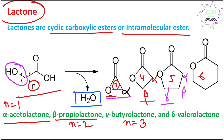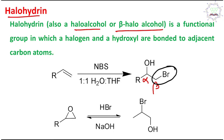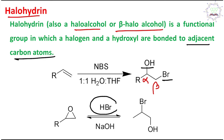Another key term is halohydrin, also called halo alcohol or beta-halo alcohol. The alpha carbon and beta carbon are in a 1,2-position — the hydroxyl and halogen are bonded to adjacent carbon atoms. If you open an epoxide in presence of acid, a 1,2-diol or halohydrin could be produced. I have already made a dedicated lecture on epoxide opening which you may visit for better understanding.